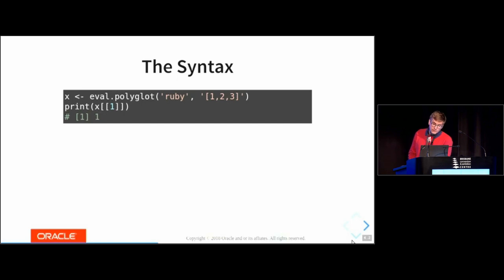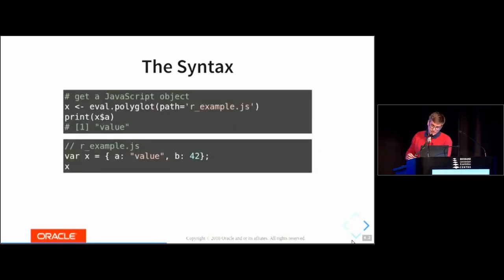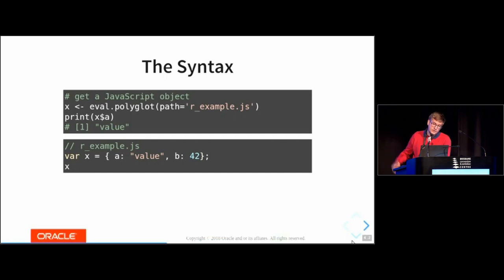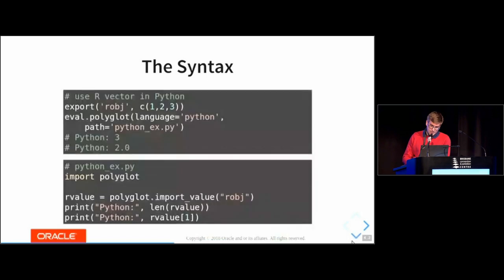Most built-ins in FastR can work with arbitrary objects from different languages. In this case we can just subscript the vector X and get the first element — because it's R it's one-based indexing. Another example uses a different interface of the eval.polyglot function: the named argument 'path' lets you give the name of a file and the language is inferred from the extension. In this case we're executing some JavaScript that creates a JSON object, which is passed back to R and saved in the X variable — again, no marshalling, no data copying — and we can access a field of the JSON object directly.